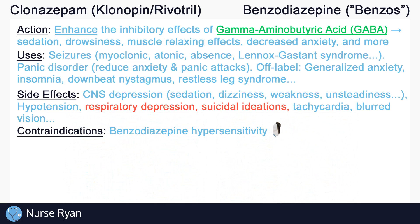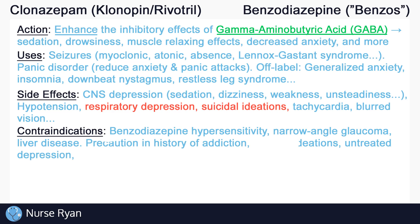Clonazepam is contraindicated in patients with hypersensitivity to benzodiazepines. Also, avoid use in patients with narrow-angle glaucoma, as clonazepam may increase intraocular pressure in rare cases. According to manufacturers, clonazepam should also not be given to those with severe liver disease. Precaution should be used in patients with a history of addiction and patients with suicidal ideations.